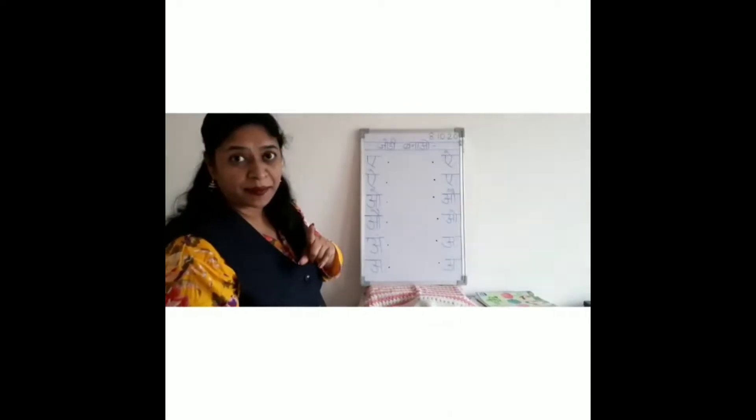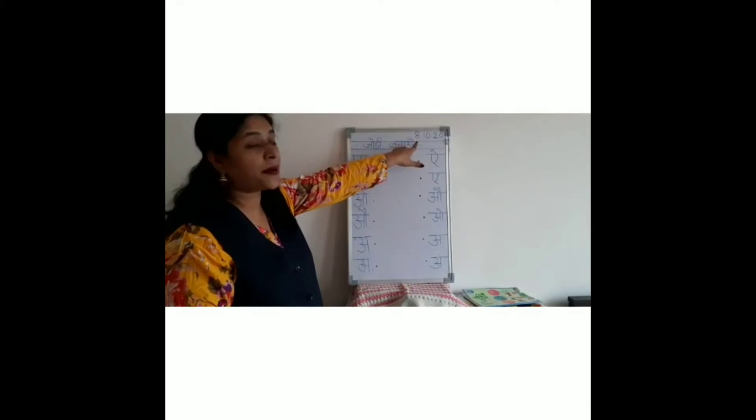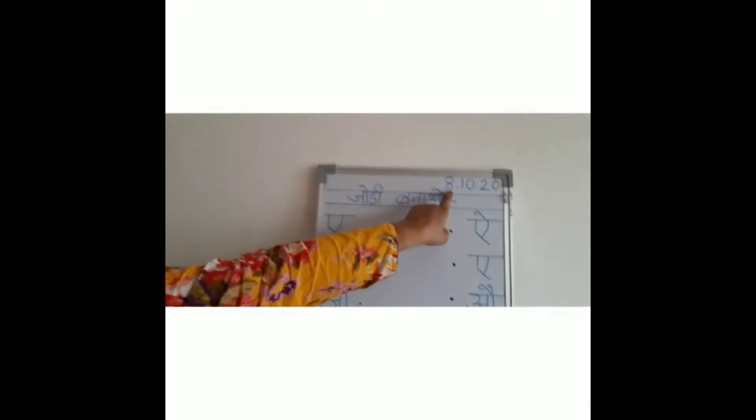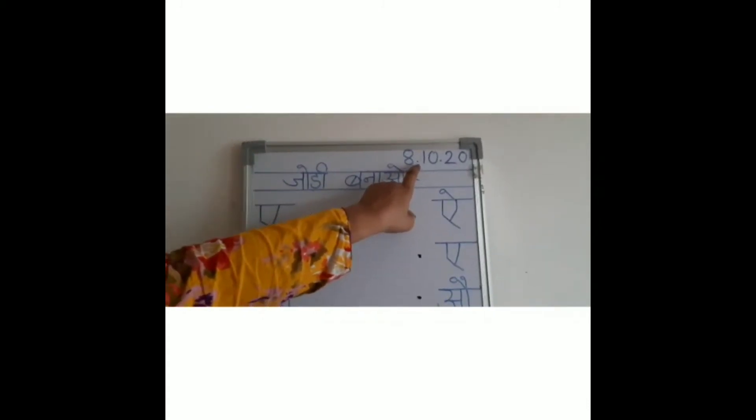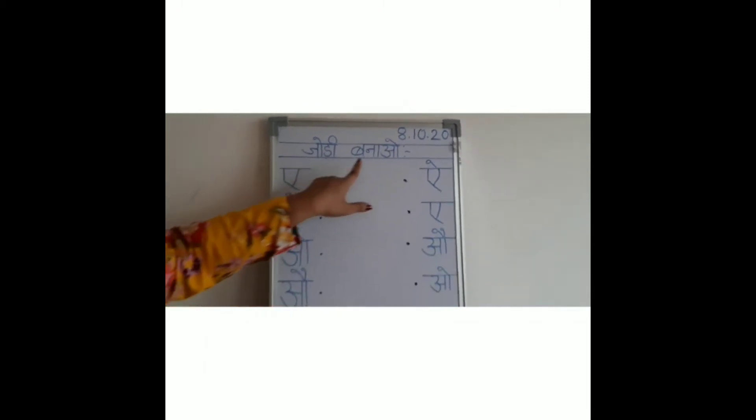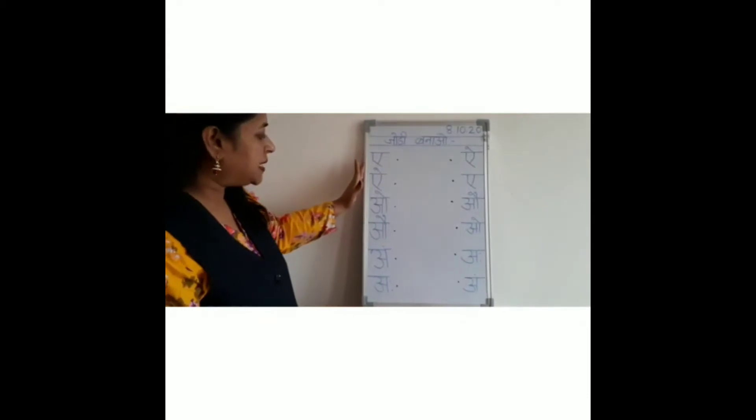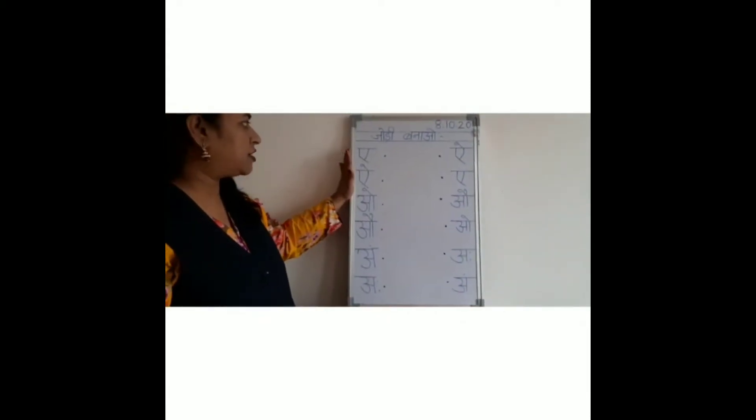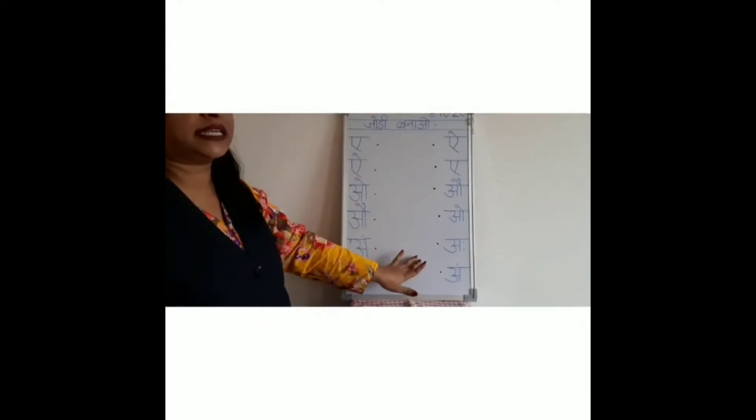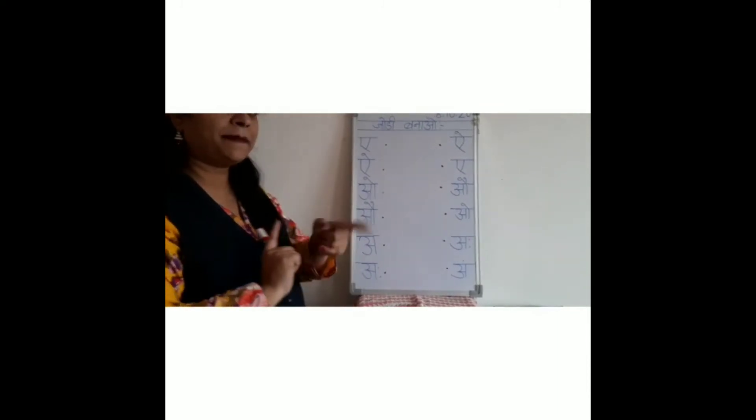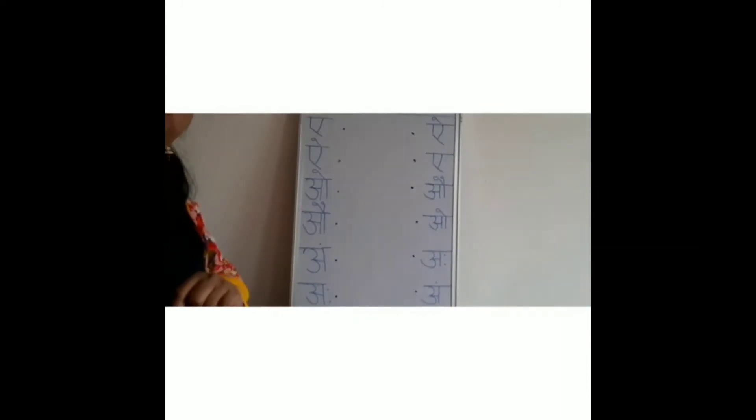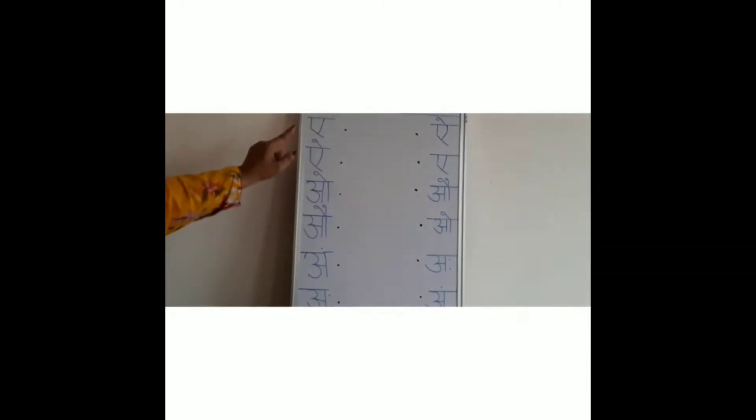Today we will revise it once more, okay? So before that, what do we do? We write the date in our copy: 8.10.20. And after that, write 'jodi banao' like this. You see, ma'am has written it the same way, alternating style.